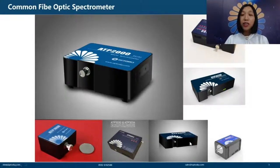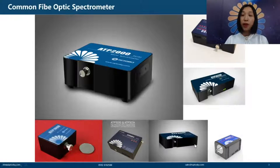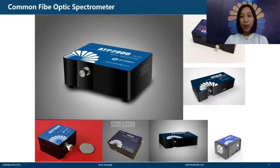We also have longer spectrometers. It's longer because it's designed to be installed inside an enclosure and has reserved ventilation ports for heat dissipation, as these are cooled spectrometers. And this is the mid-IR spectrometer.